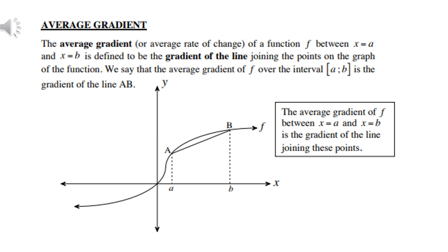Let's first look at average gradient. The average gradient, or average rate of change, of a function f between x equals a and x equals b is defined to be the gradient of the line joining the points on the graph of the function. We say that the average gradient of f over the interval a and b is the gradient of the line AB.